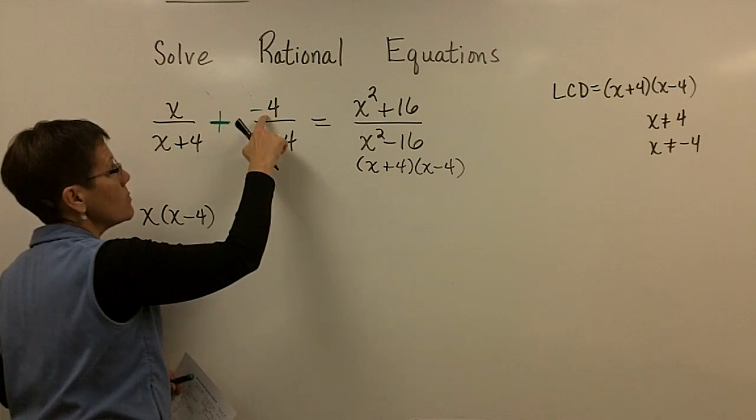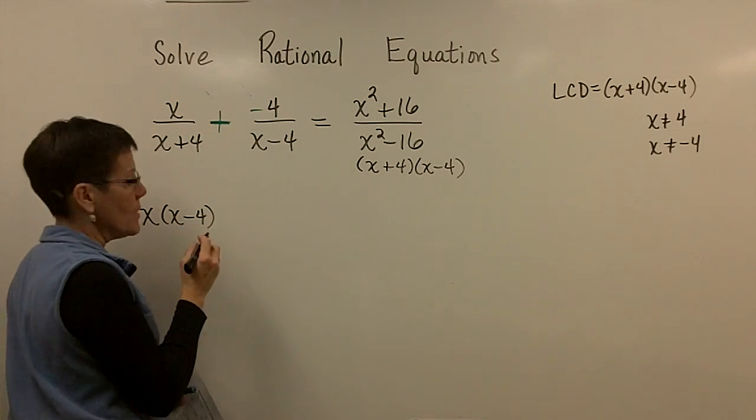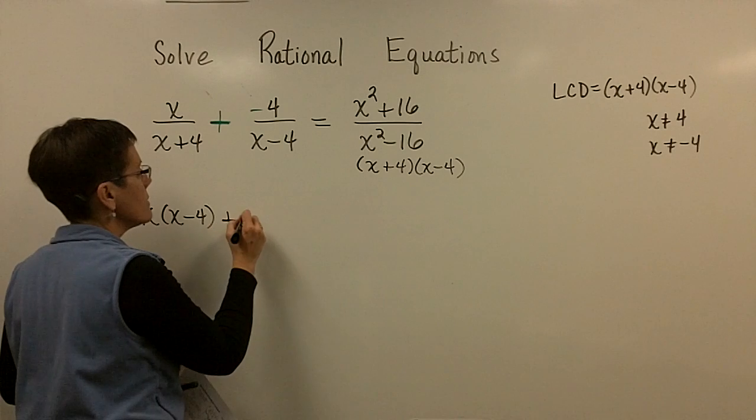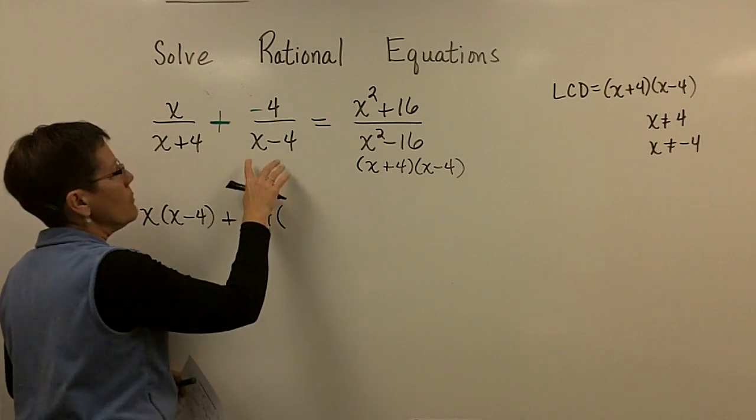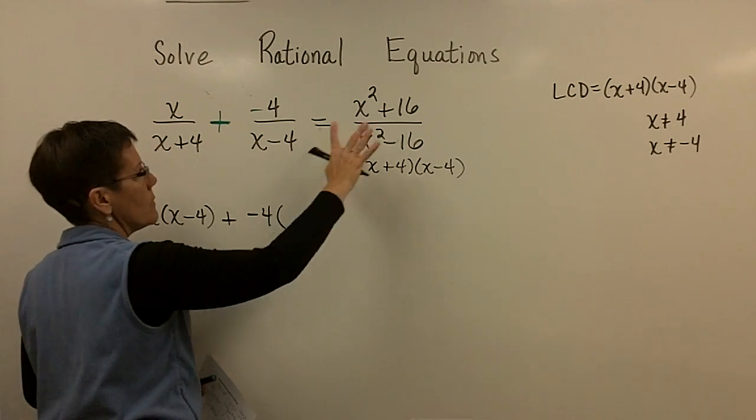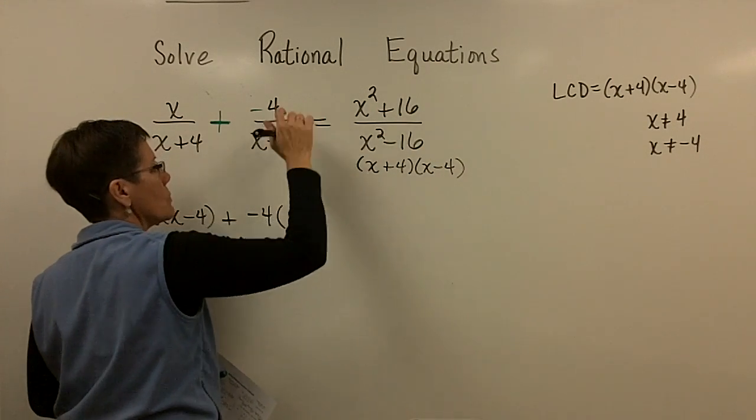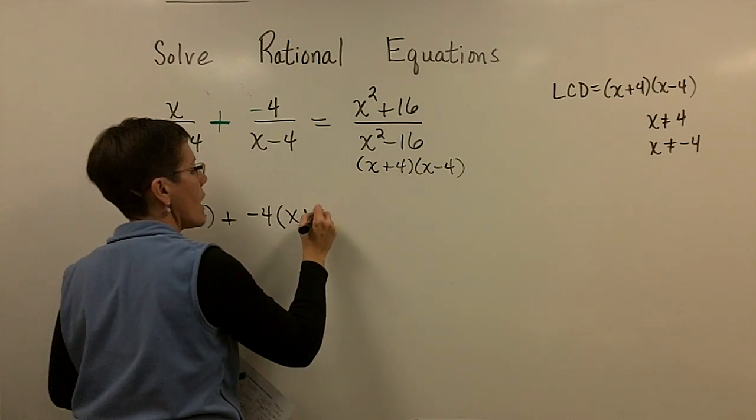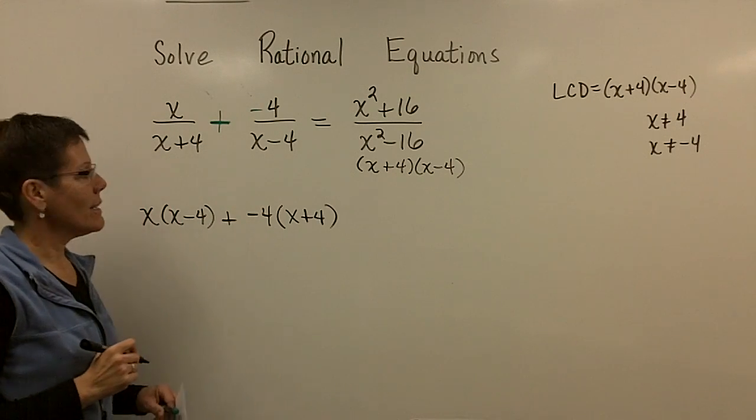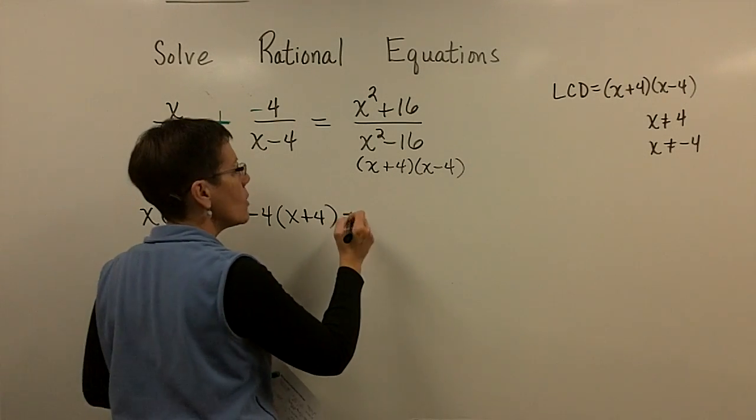Let's start right here though. If I multiplied this fraction by the whole LCD, the x plus 4s would cancel out, and the piece that's missing, or the x minus 4, is what would get multiplied by this x. So you would have x times x minus 4. Denominator's all gone. It's easiest when this is a monomial to just swipe, swipe that, and think of that as negative 4.